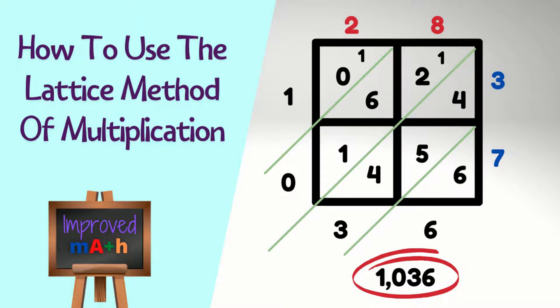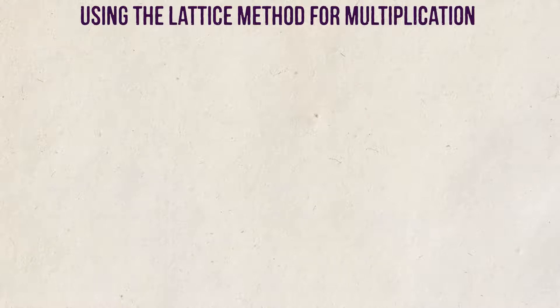Today, we're going to look at a different way for doing multiplication. It's called the lattice method. Some may argue that it's faster, while others don't think so. Either way, I'm going to show you how to do it so you can make up your own mind.